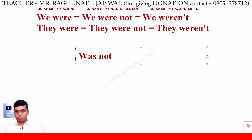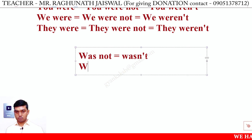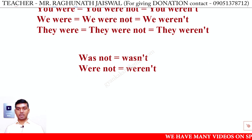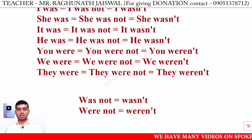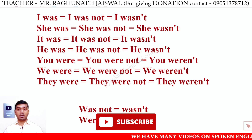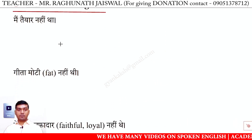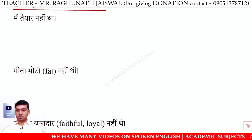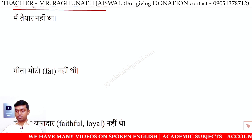Was not ka short form hota hai 'wasn't'. Were not ka short form hota hai 'weren't'. Yeh set likh lijiye kyunki iska istemal hum log abhi karne wale hain. Pehle video ko pause karke aap sentence banaiye, phir main aapko answer deta jaunga, milate rahiyega.